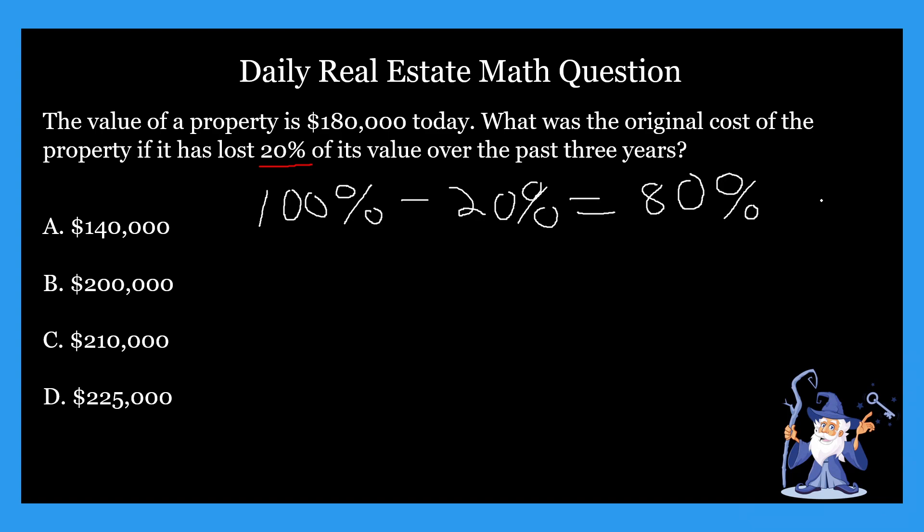So again, 100% minus this 20%, which is our total depreciation, gives us 80%. So do you guys know what that means? What the 80% means? Well, that means the value of the property is currently worth 80% of what it used to be. Does that make sense?